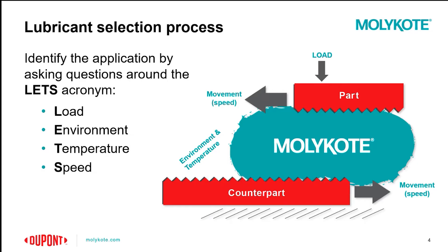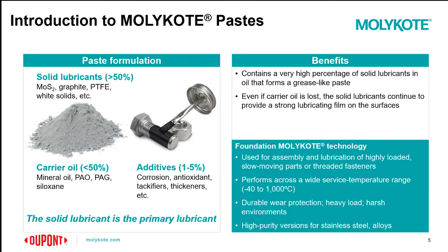Each parameter can have a very profound impact upon the friction dynamics within a given application. This presentation will be focusing on Molycote paste. The paste is formulated with three constituent components: a solid lubricant, which is the primary lubricating component within the formulation; a carrier oil; and additional additives, which are selected based on performance needs. The solid lubricant composes the majority of the formulation, the carrier oil is the second greatest component — typically less than 50% of the composition — and additives are between 1% to 5% of the composition.